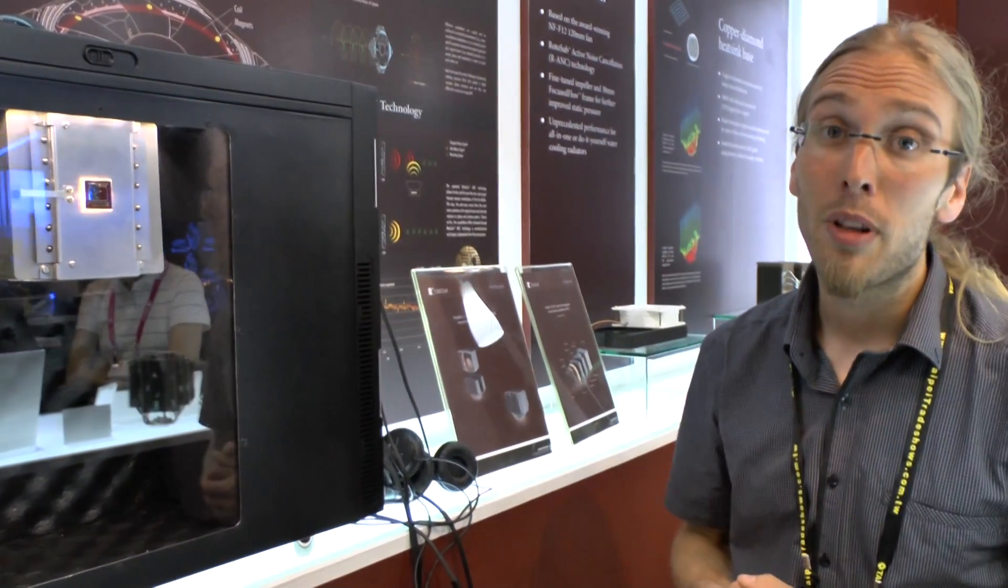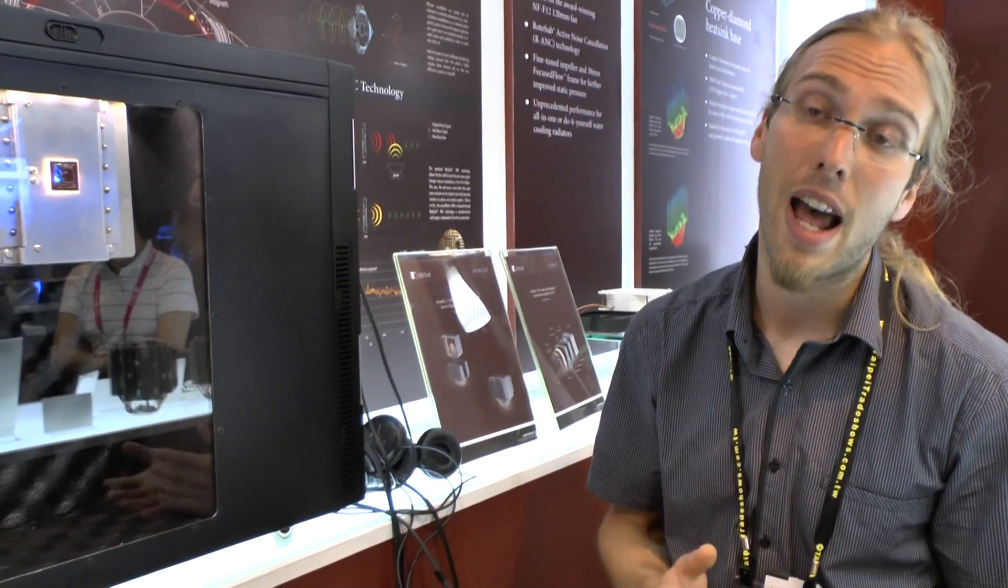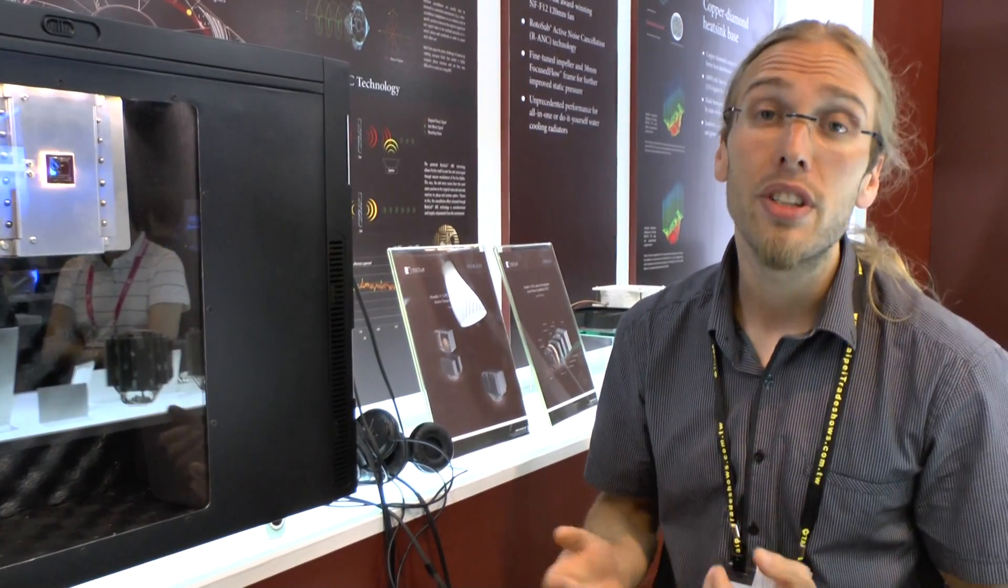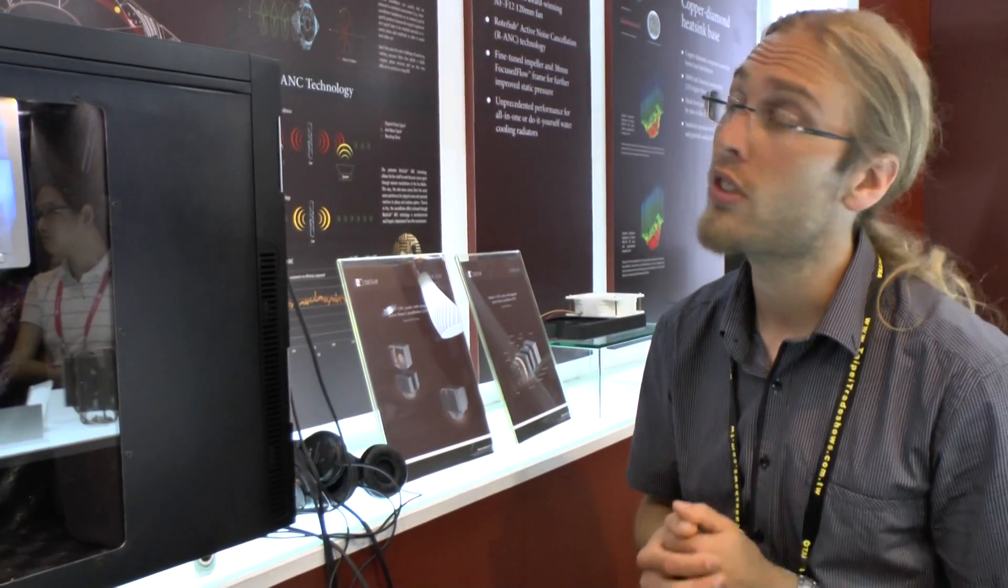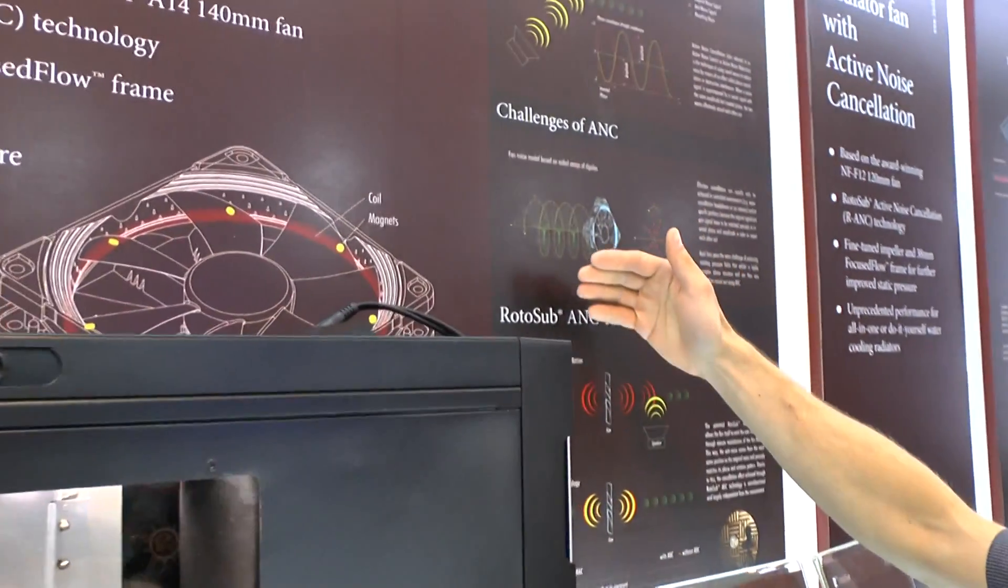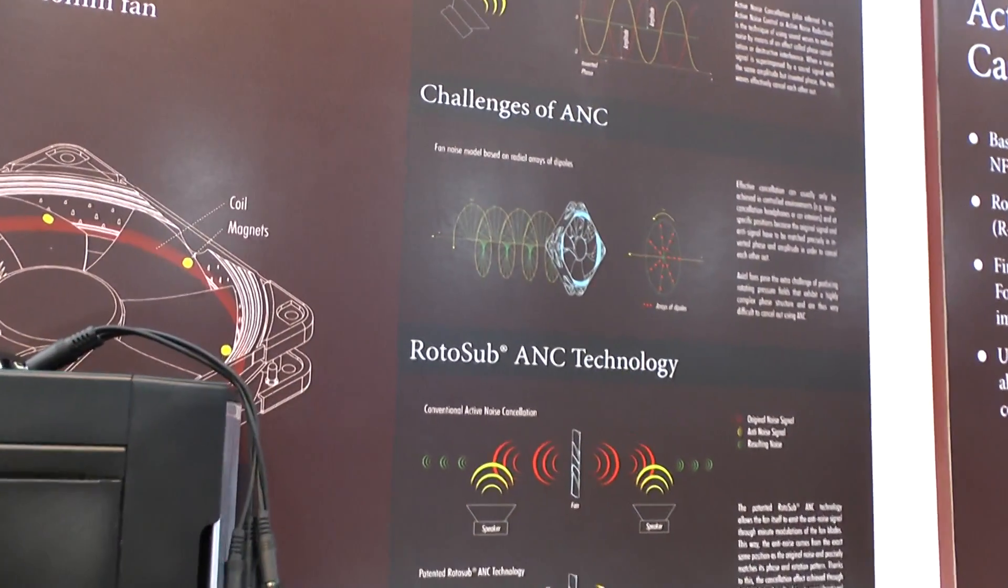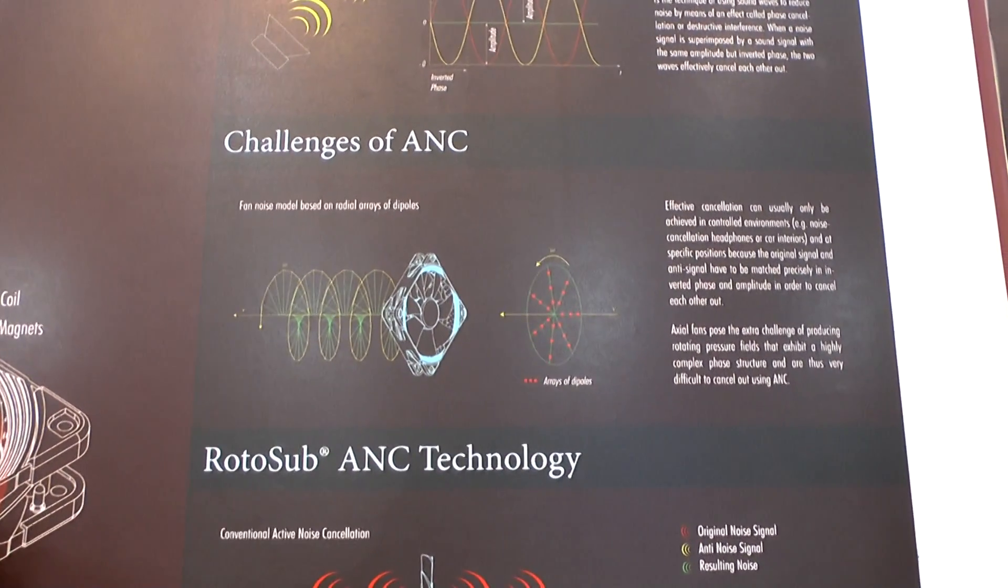Basically, the principle behind active noise cancellation is to use one sound wave to cancel out another sound wave. Now the reason why this hasn't been applied to fan technology so far is that the way fans emit noise is so complex. Fans put out these rotating pressure fields, so when you want to do active noise cancellation on the fan, you have to make sure that you match these rotating pressure fields.